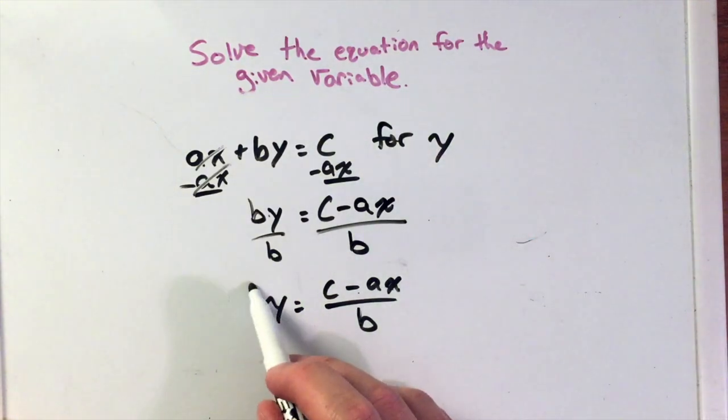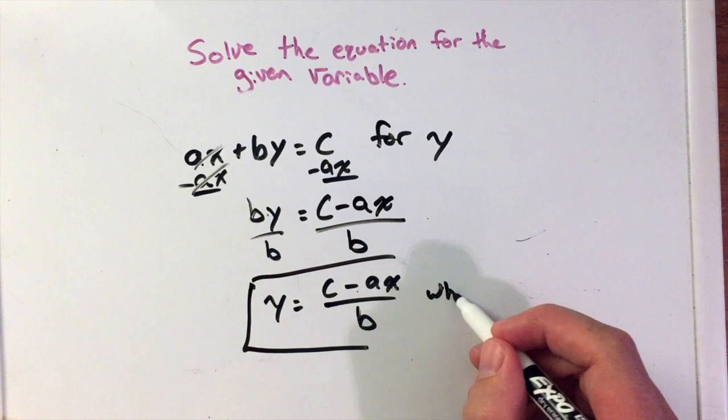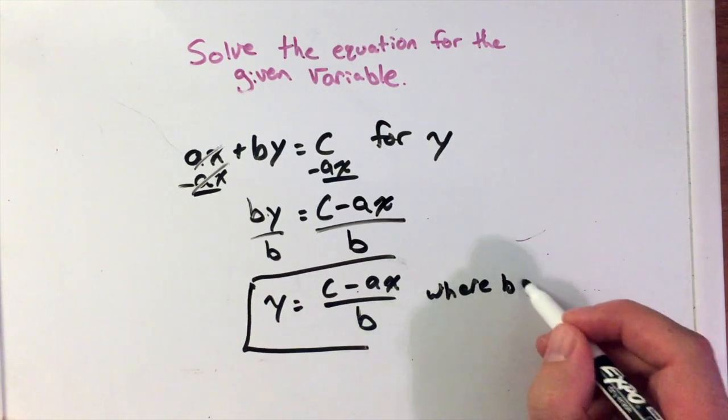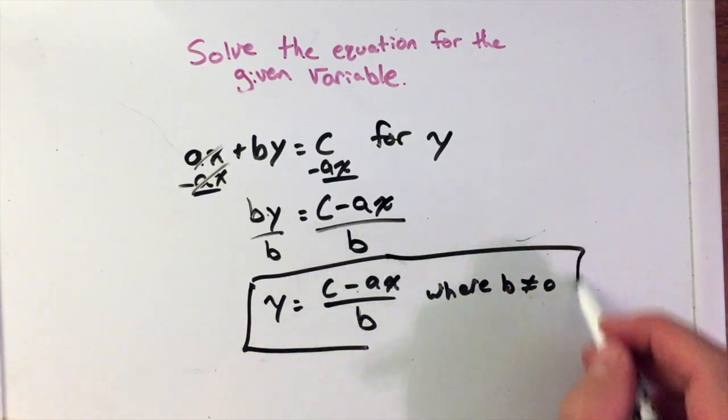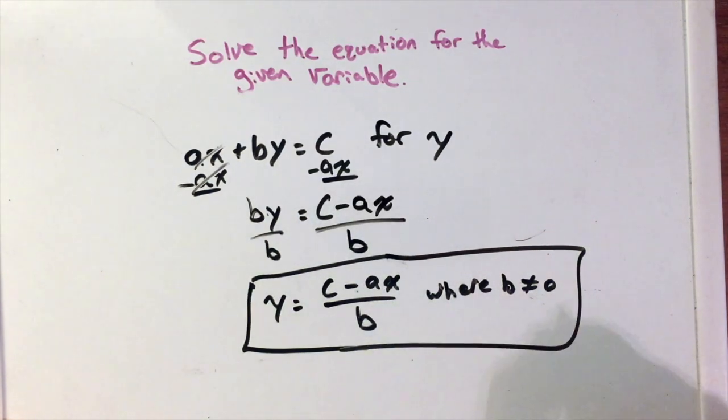I'm going to leave b as it is right here, but we are forgetting one last thing: where b does not equal zero, because we know that b cannot equal zero because that would make this equation undefined. Thank you for watching and please subscribe to our YouTube channel.